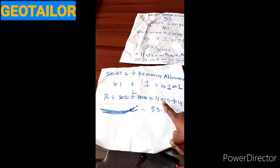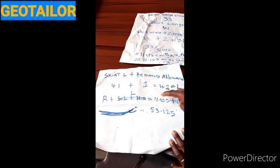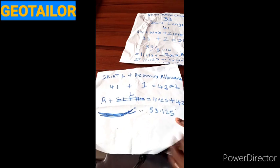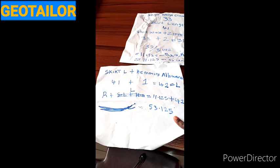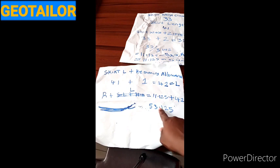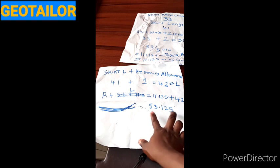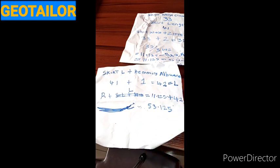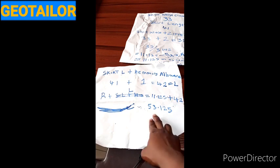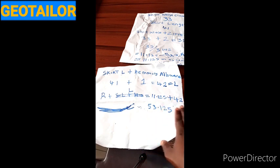R plus L is 11.125 plus 42, which gives me 53.125. All I need to do now is take my fabric and measure out 53.125 in two places. I'll approximate this to 54, so I'm going to cut out a fabric of 54 inches in two places.